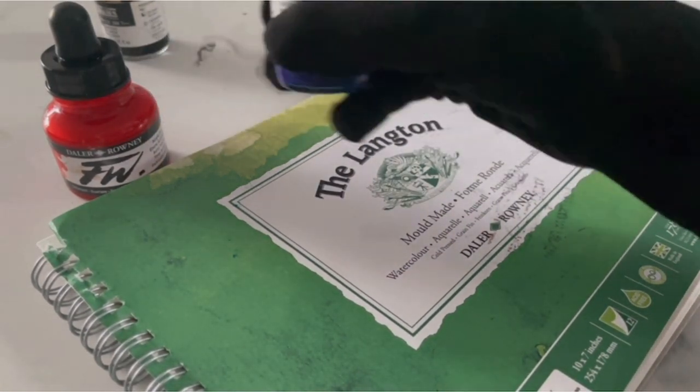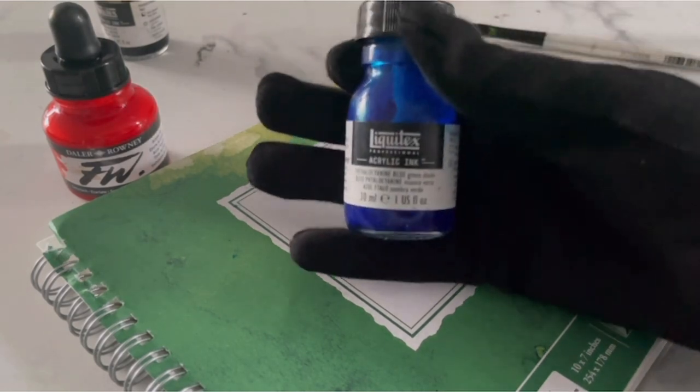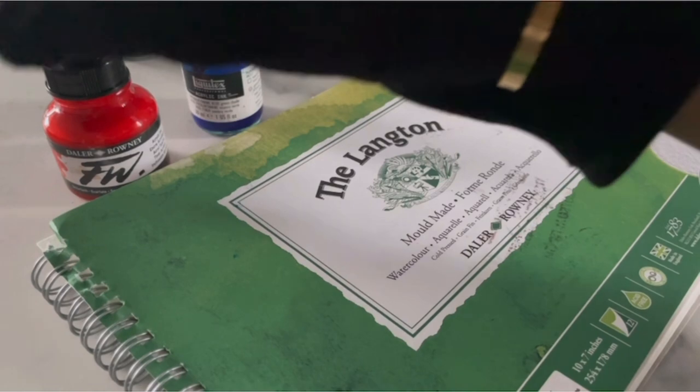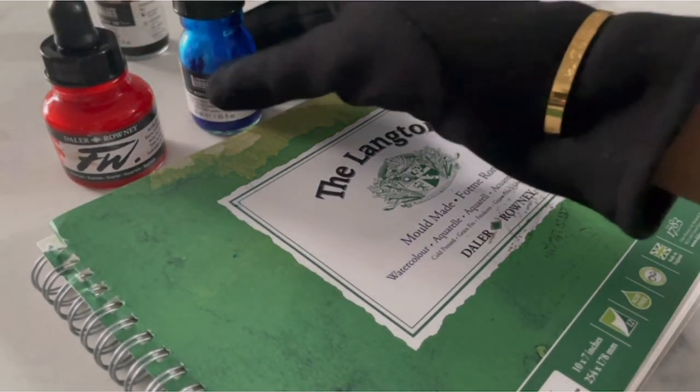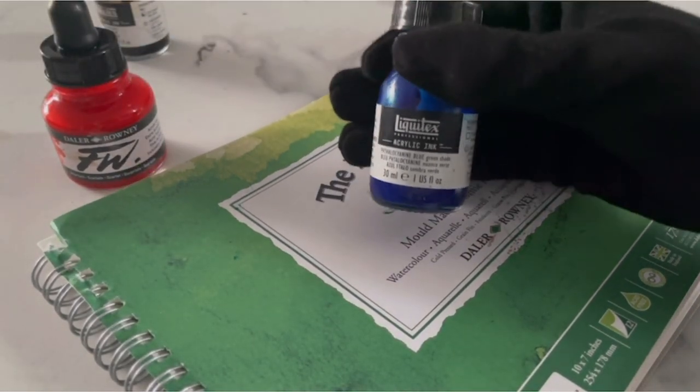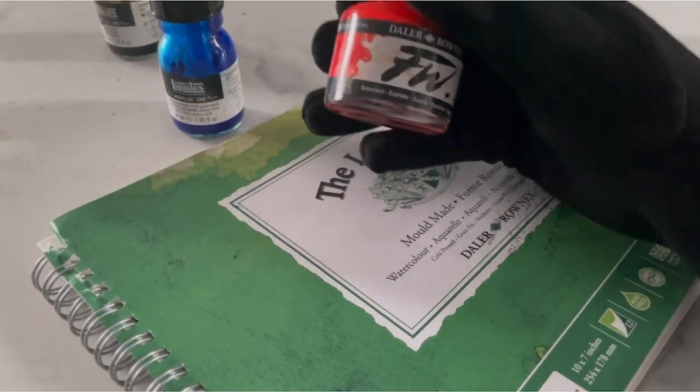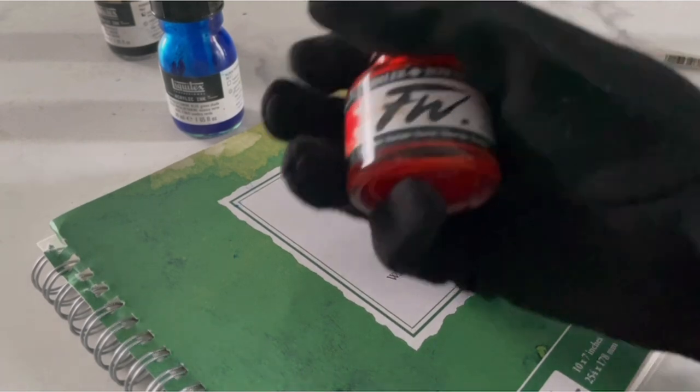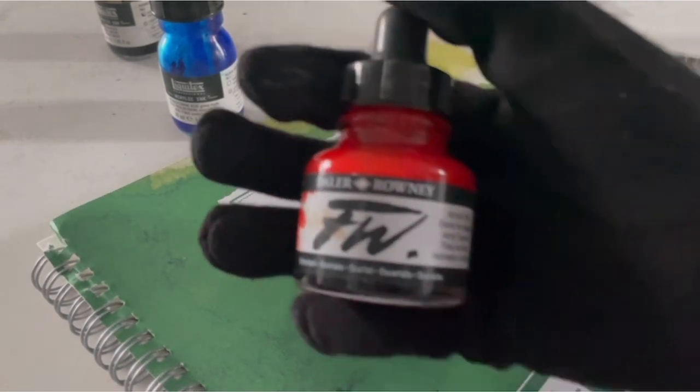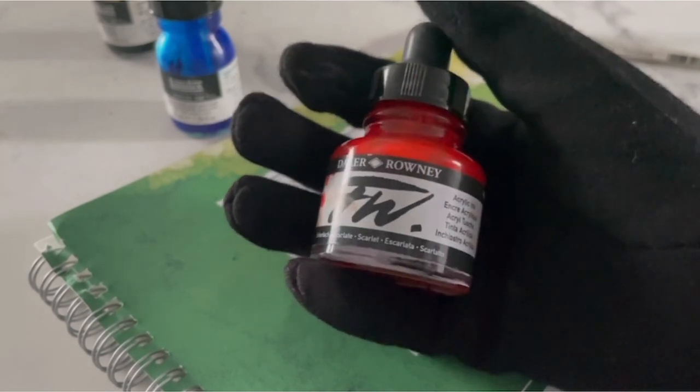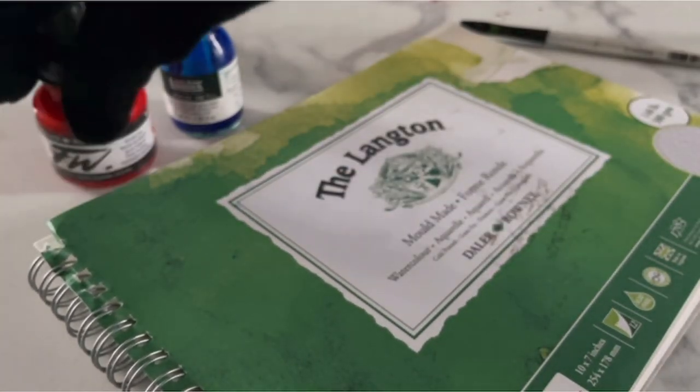I'm using two different types of inks today - they are both acrylic inks. This blue shade is from Liquitex and I'll be using the blue shade for the main Arabic letters. This red shade is from Daler Rowney. I'm using two different shades today just because I wanted to show you the difference between the actual Arabic letters and the harakat.